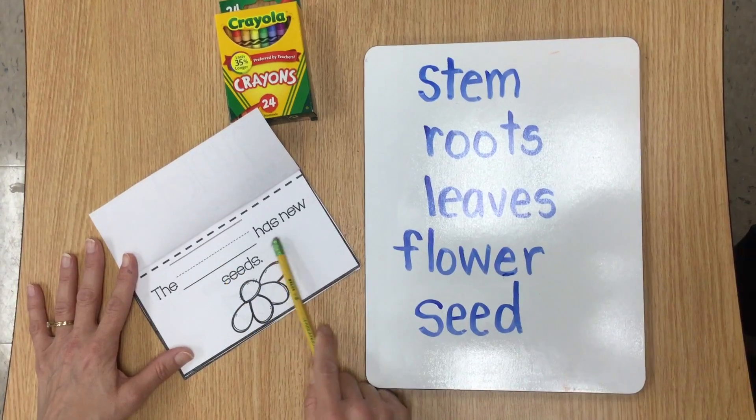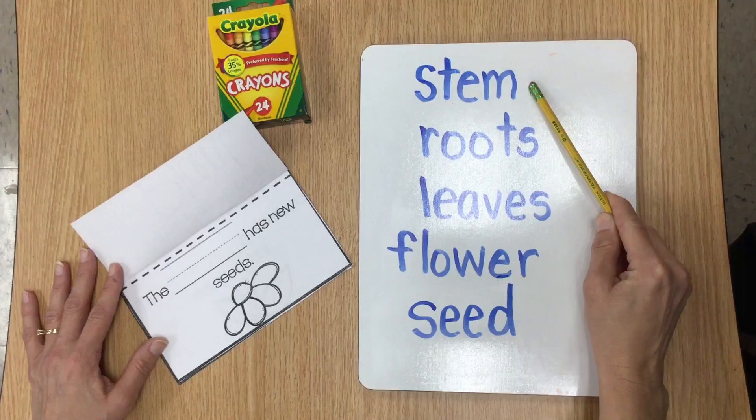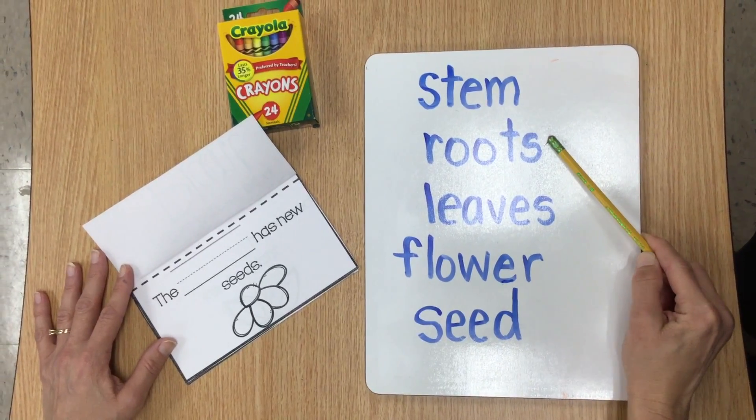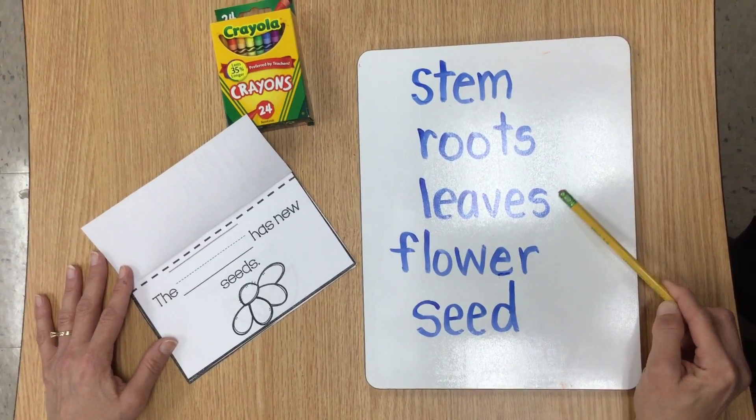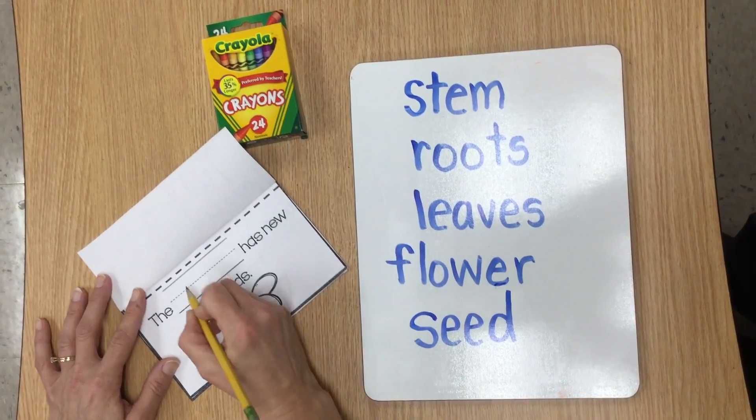The blank has new seeds. The stem, no. The roots have new seeds, no. The leaves, the flower, yes. The flower.